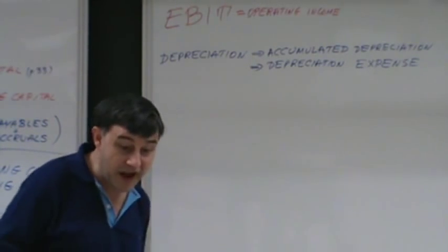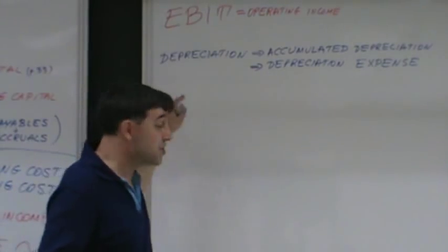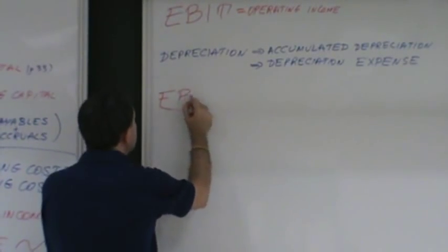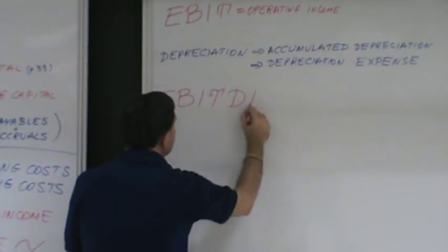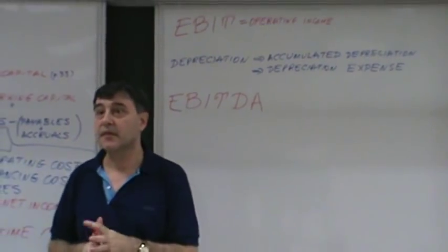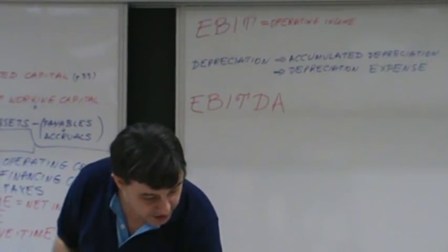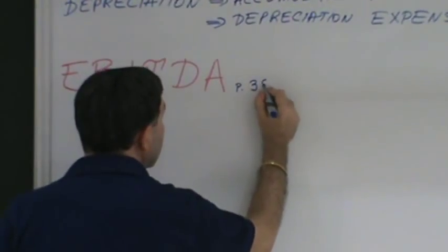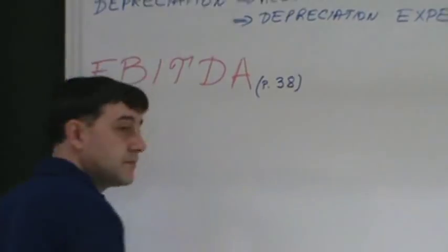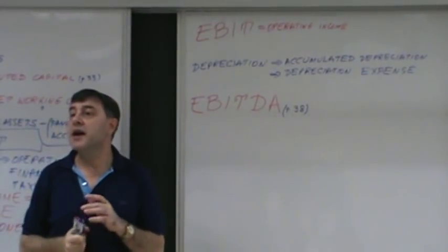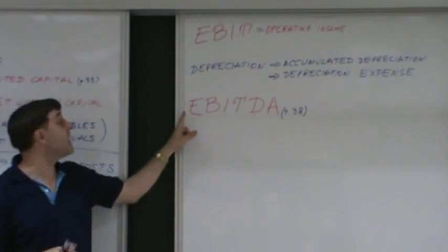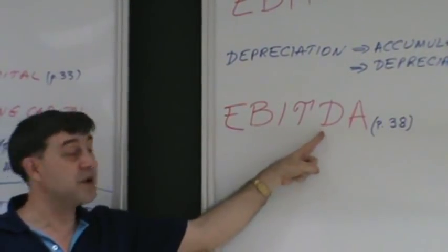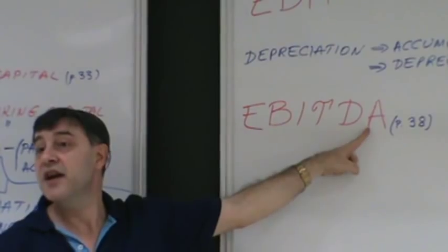The last concept of the income statement is EBITDA — found on page 38. EBITDA stands for Earnings Before Interest, Taxes, Depreciation, and Amortization. If you follow along in the textbook, EBIT is the same as before, and EBITDA adds back depreciation and amortization.